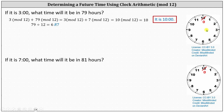Starting at three o'clock, let's count ahead 79 hours. Going ahead 12 hours at a time — each rotation represents 12 hours — we have 12, 24, 36, 48, 60, 72 hours, then 73, 74, 75, 76, 77, 78, 79, and it's 10 o'clock.